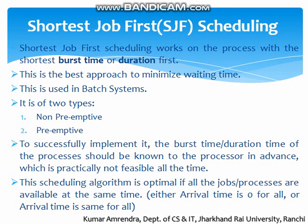Hello students. Today we are here to study the second CPU scheduling algorithm, which is Shortest Job First. Before this, we have gone through the first CPU scheduling algorithm, First Come First Serve. The second one is Shortest Job First. The name suggests that the shortest job will get execution first in the CPU. Let's see point-wise the details of Shortest Job First.